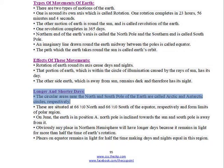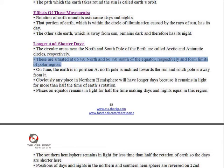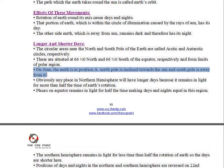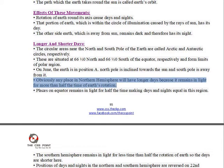The circular areas near the North and South Pole of the Earth are called Arctic and Antarctic circles respectively. These are situated at 66.5° north and 66.5° south of the equator, and form the limits of the polar region. On June, the Earth is in position A — the north pole is inclined towards the Sun and the south pole is away from it.